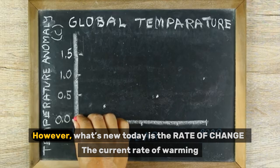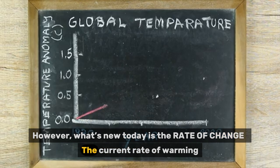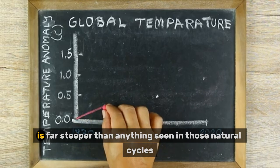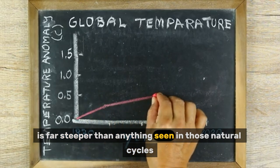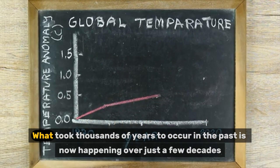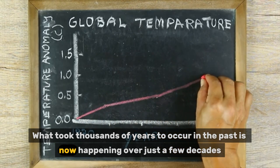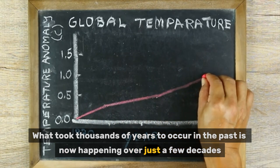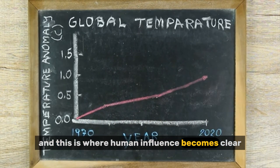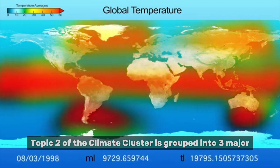These records show us that over the last 800,000 years, earth has cycled through glacial and interglacial periods due to natural factors. However, what's new today is the rate of change. The current rate of warming is far steeper than anything seen in those natural cycles — what took thousands of years to occur in the past is now happening over just a few decades. And this is where human influence becomes clear.